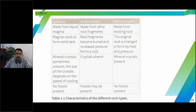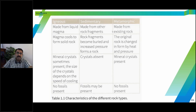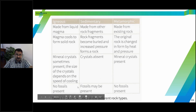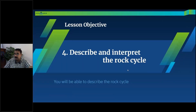To summarize the comparison: igneous rocks are made from liquid magma, sedimentary rocks from rock fragments or sediments, and metamorphic rocks from pre-existing rocks — sedimentary or igneous. Regarding crystals, sedimentary rocks generally lack mineral crystals, while metamorphic and igneous rocks have mineral crystals present. Fossils are absent in igneous and metamorphic rocks but may be present in sedimentary rocks.